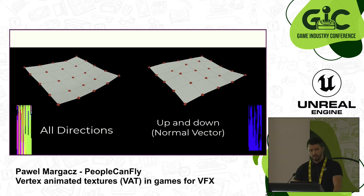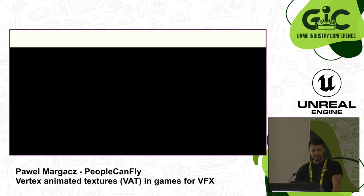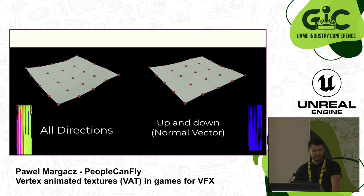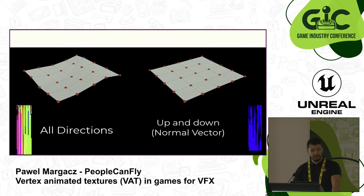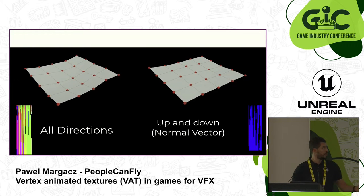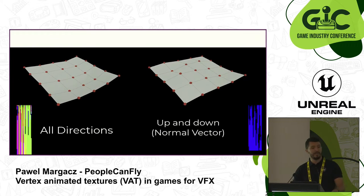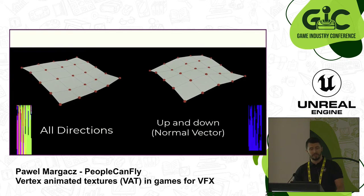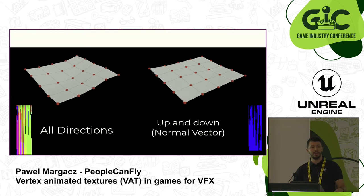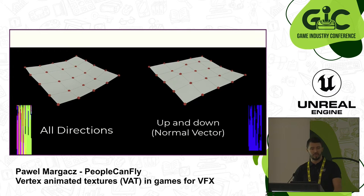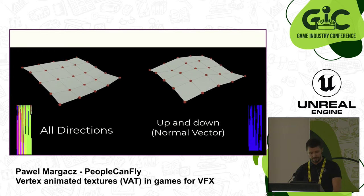Usually, if you want to animate on bones and skeletal meshes, you're going to have that on the CPU. However, with the VAT method, you can unload from the CPU and put it on the GPU instead.